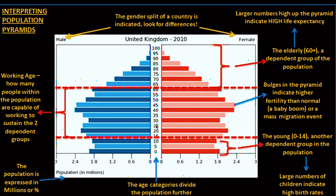In some countries, pension or retirement comes at 60; for some public offices it may be 65 or even 70. After that the bars begin to shrink toward the top. At age 100 only very few people remain, so you don't see long bars there on either the male or female side.